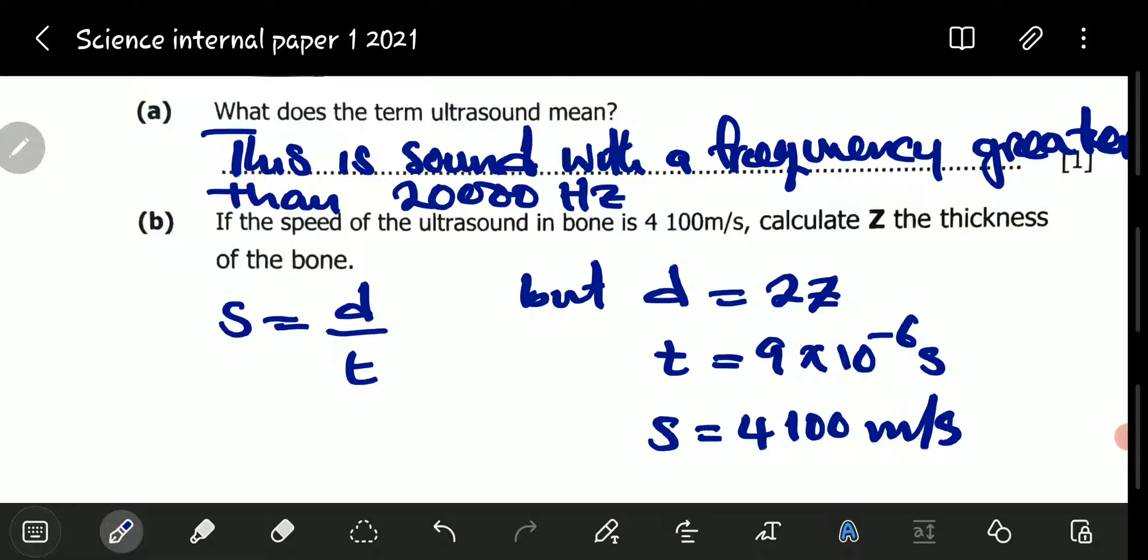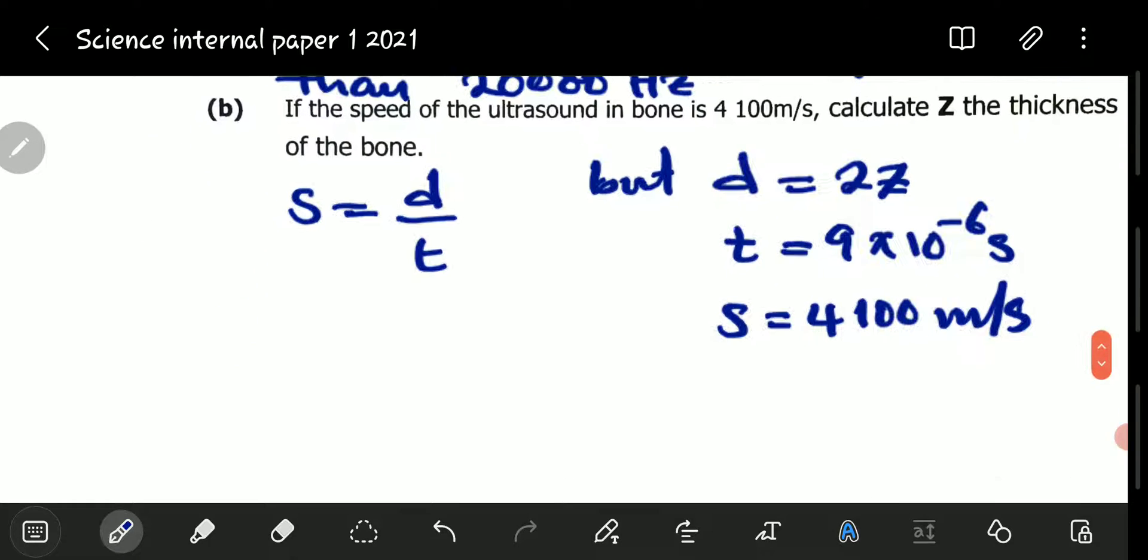Our distance is equal to 2Z. And our time is equal to 9 times 10 to the power negative 6 seconds. And our speed is equal to 4,100 meters per second. We have all this information. We can just put it into the equation and solve. So, we are going to have 4,100 is equal to 2Z divided by 9 times 10 to the power negative 6.